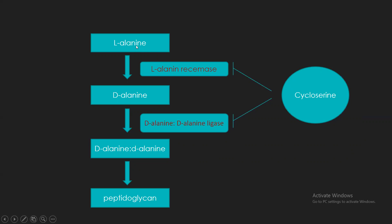L-alanine is converted into D-alanine by the action of L-alanine racemase, and then D-alanine is converted into D-alanine-D-alanine by the action of D-alanine-D-alanine ligase. This D-alanine-D-alanine is then used to form peptidoglycan. This drug inhibits these two enzymes, which are essential for these steps, so these steps are halted and there is no more peptidoglycan available for cell wall synthesis.